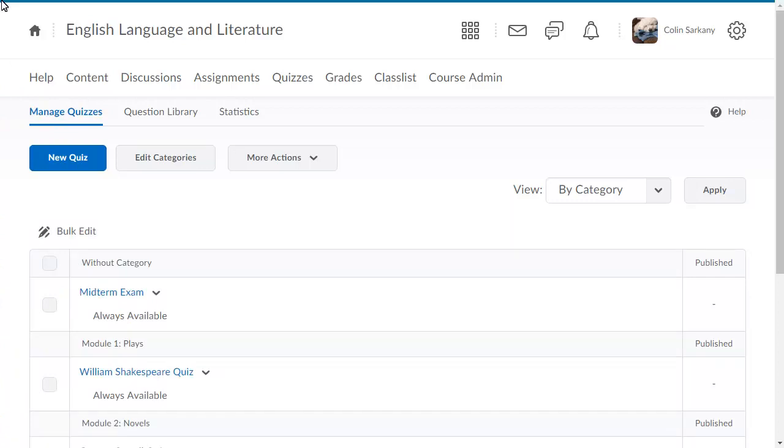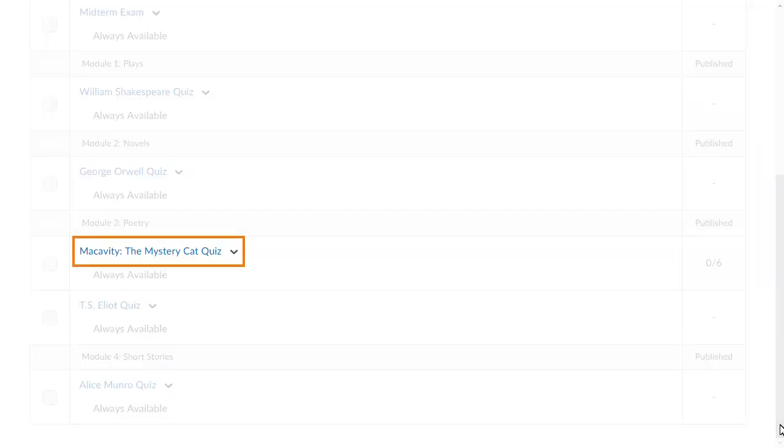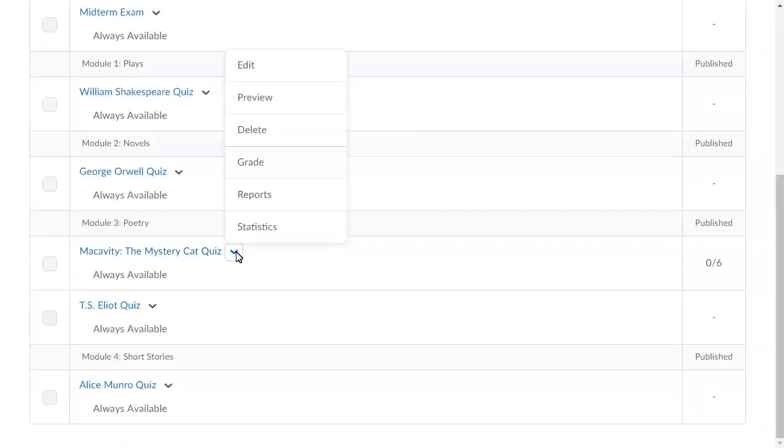To begin, from Quizzes, navigate to the quiz you are grading. Click its context menu and select Grade.